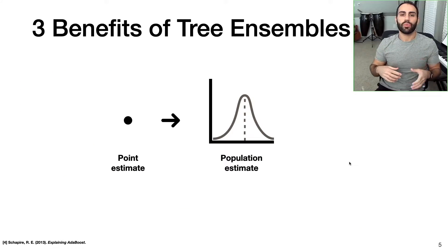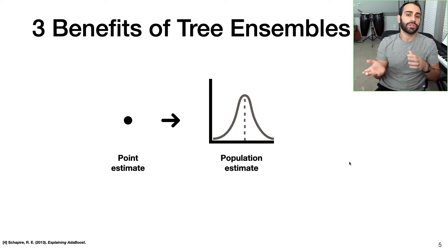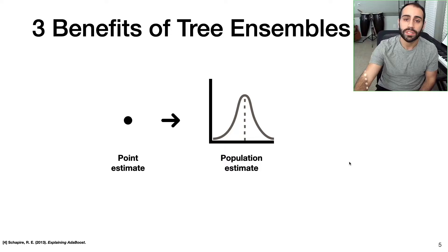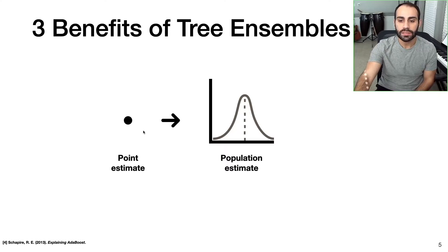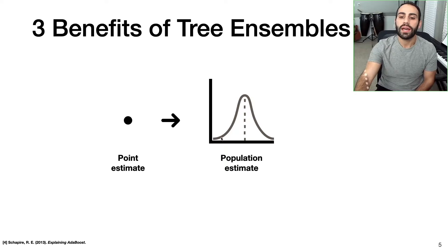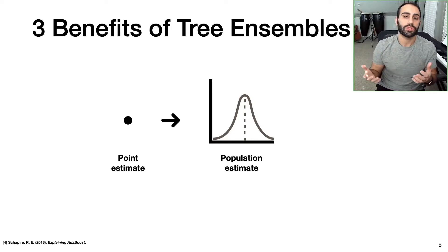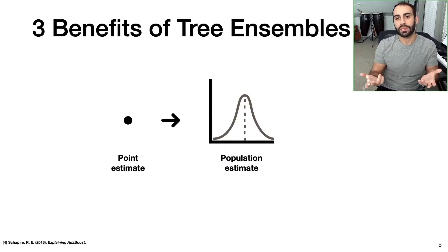Coming back to the question of why decision tree ensembles are better than single decision trees — if I were to summarize everything into a single picture, we're essentially going away from point estimates toward population estimates. Instead of just having a single number as our prediction from one decision tree, we now have a population of predictions from our decision tree ensemble.